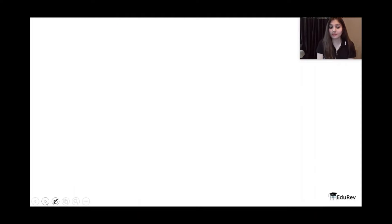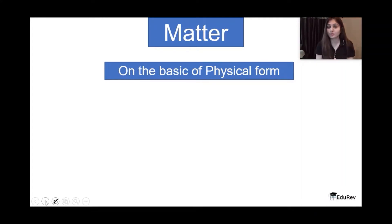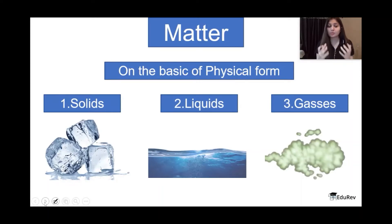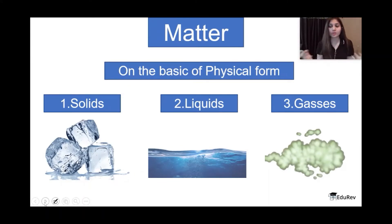Moving on, there are two kinds of classifications of matter. The first classification is on the basis of physical form — the way you see it. Matter is visible in three different forms: solids, liquids, and gases. Solids are quite rigid because the bonds are quite strong — the atoms or molecules are tightly held together. Liquids are quite flowy and not rigid because the bonds are weaker. Gases are not at all rigid, meaning the bonds are very weak. We will study solids, liquids, and gases in detail another time.